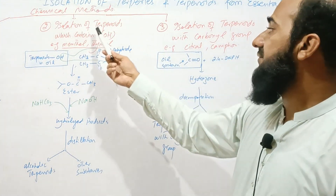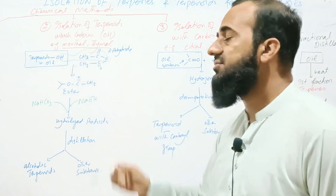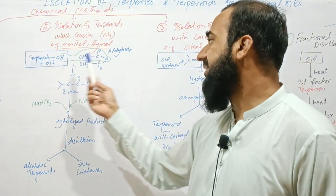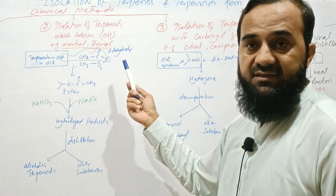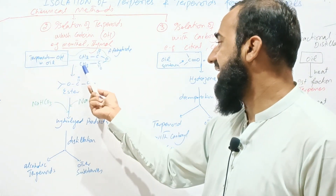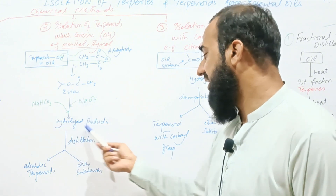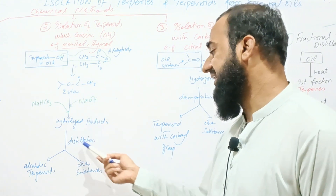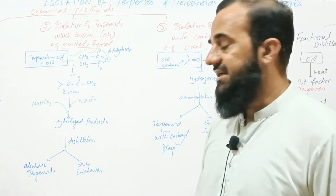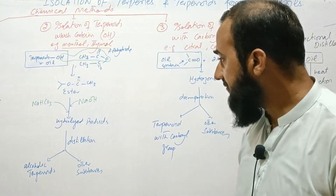The second chemical method is isolation of terpenoids which contain an alcoholic hydroxyl group, for example menthol or thymol. The oil containing terpenoids with hydroxyl group is treated with acetic anhydride. The H and acetate are removed as acetic acid, and the acetyl group forms an ester. This ester undergoes base hydrolytic reaction and we get the hydrolyzed product. These products undergo distillation and we get the alcoholic terpenoids — terpenoids containing an alcoholic hydroxyl group — separated from the mixture.